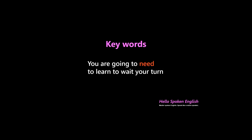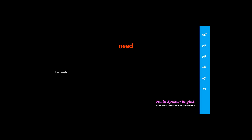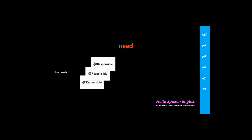OK, let's make expressions using it. Please look at the animation. Here you can see the subject "he" and the verb "needs." Then you have three signs that say "responsible," meaning more responsible. So the main idea is "he needs." Need to do what? To be how? More responsible. The full sentence is: he needs to be more responsible.